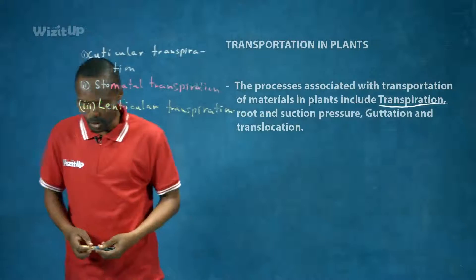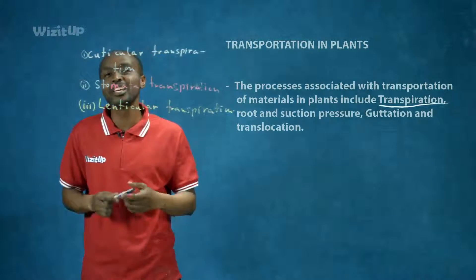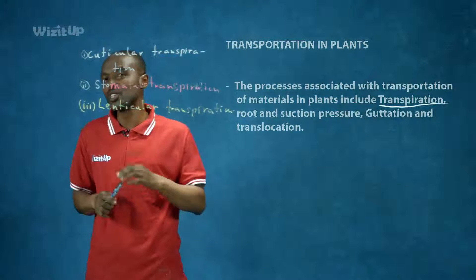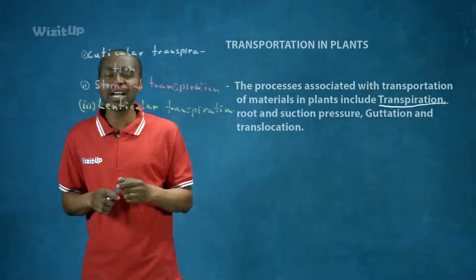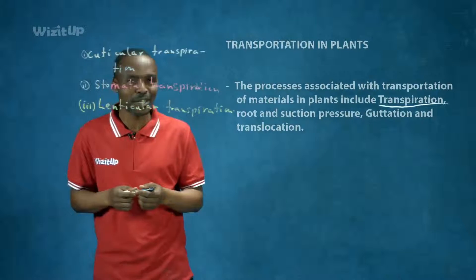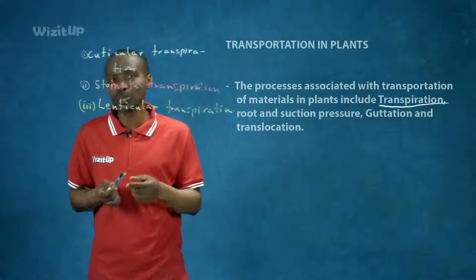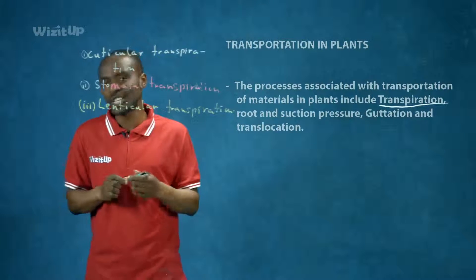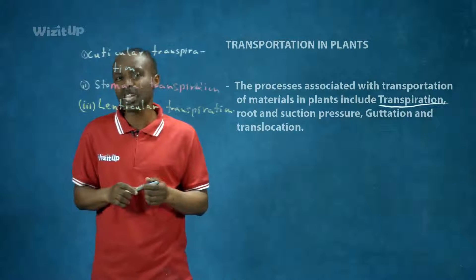These are the three types of transpiration. Cuticular transpiration is the loss of water from the surface of the leaves called cuticle. Now those areas of the leaves are waterproof-like, so they don't just allow water to be lost at will. We call those surfaces the cuticle because they have a deposit of a chemical compound called cutin.